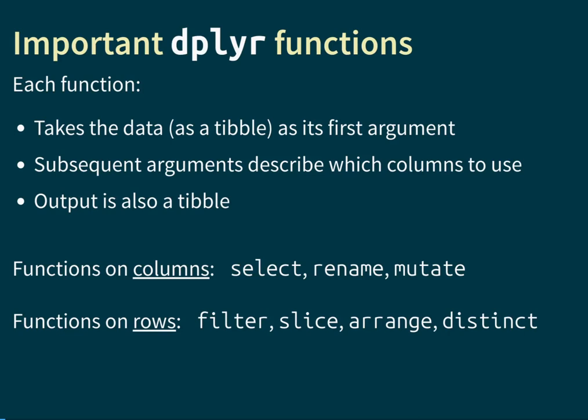We're going to be taking a look at two groups of functions today. The first group operates on columns and the second group operates on rows. The functions that operate on columns are called select, rename, and mutate. Those operating on rows are called filter, slice, arrange, and distinct. Let us take a look at each of these in turn.